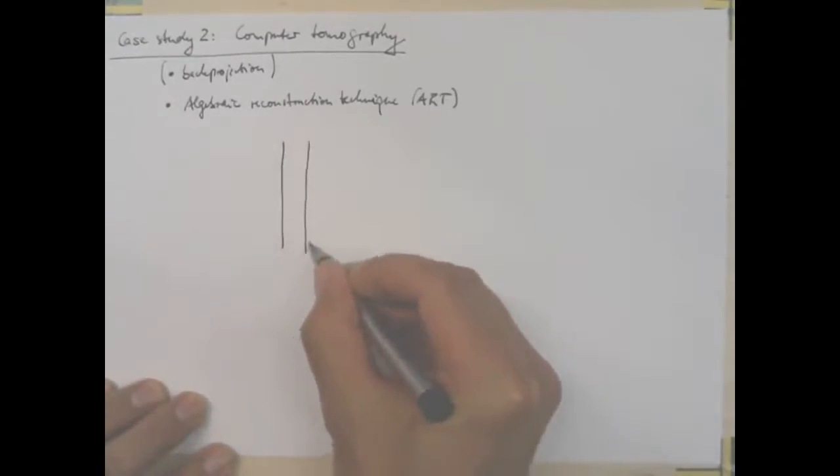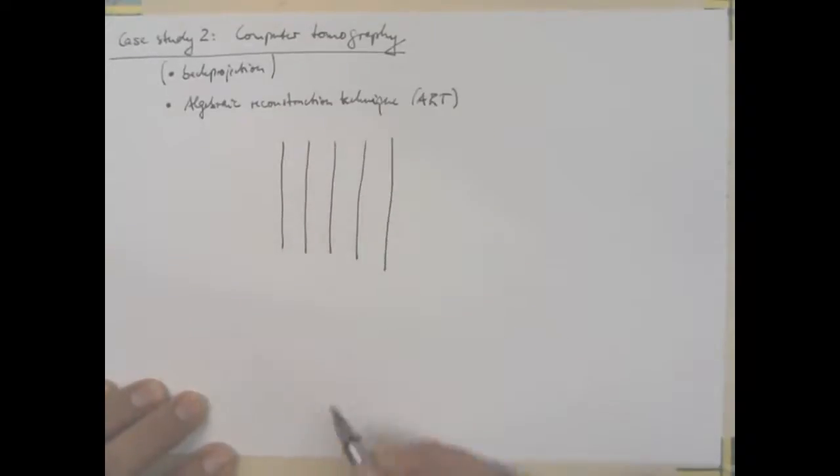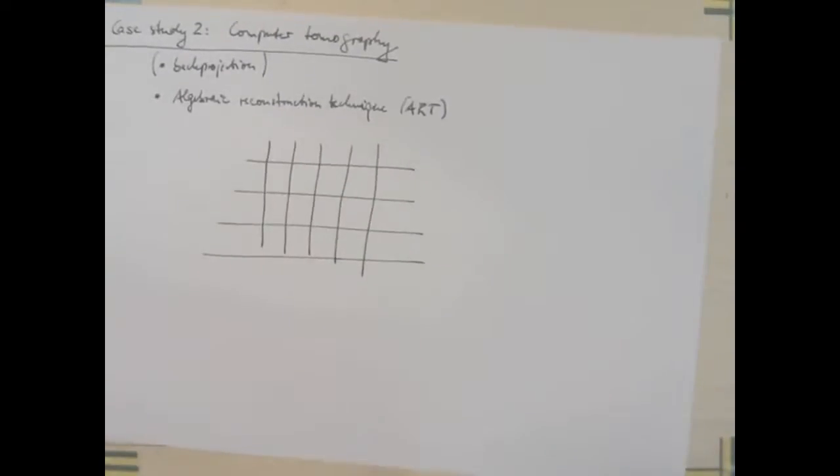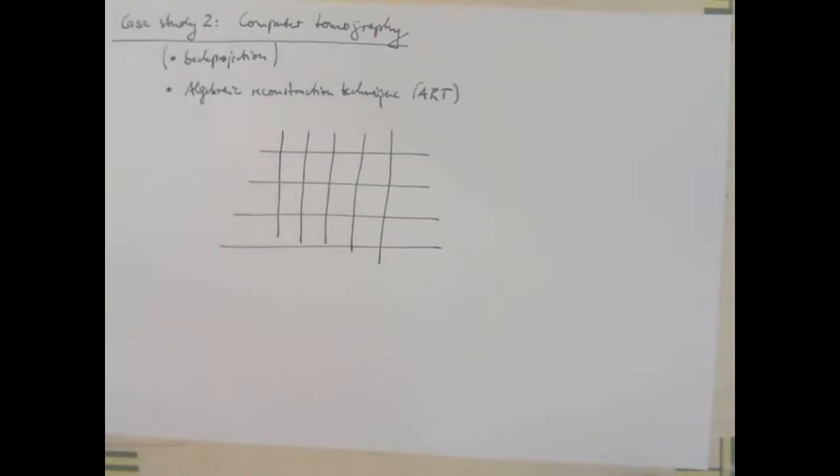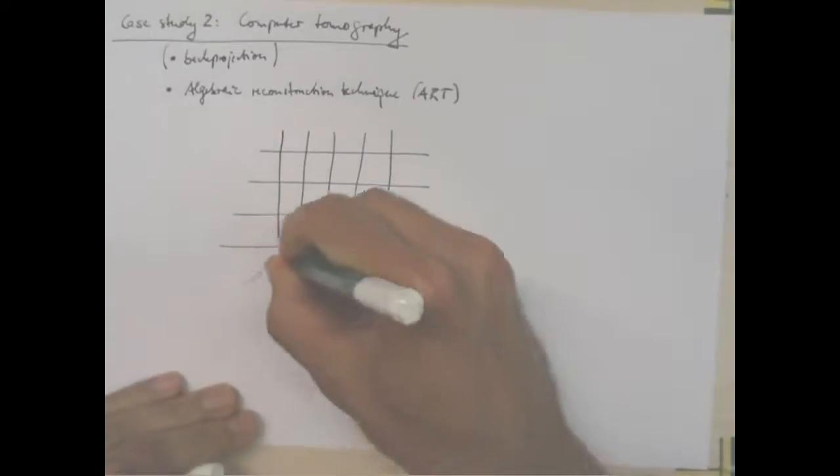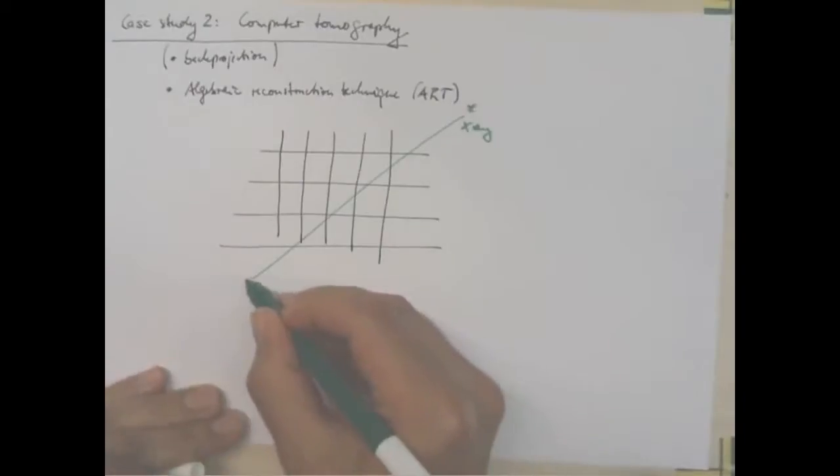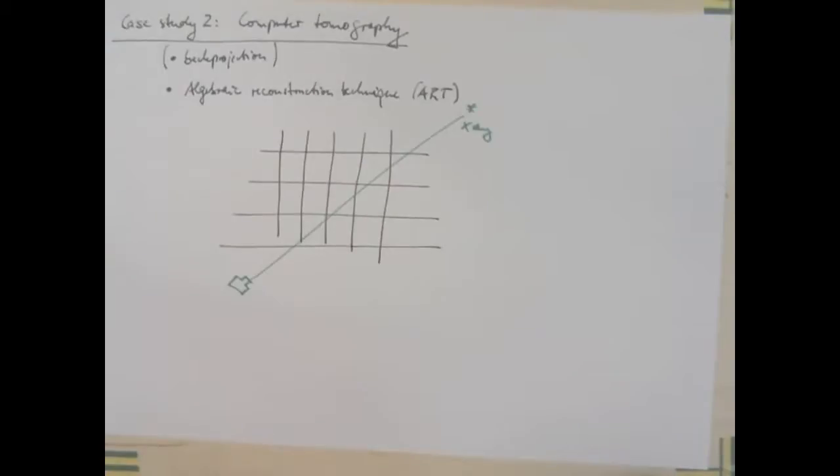But I want to talk about how this solving linear system of equations arises in the first place and what it has to do with computer tomography. Now, it works as follows. Let's say this is the image that we want to reconstruct from projections. My image consists of pixels. And I'm now taking some ray. So, let's say this is an x-ray.